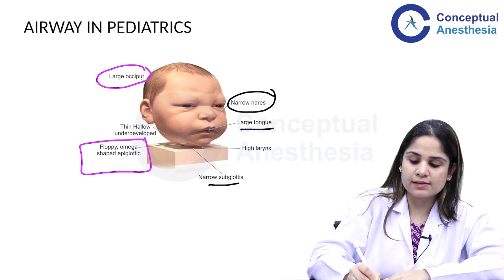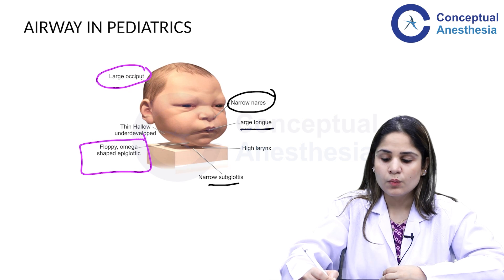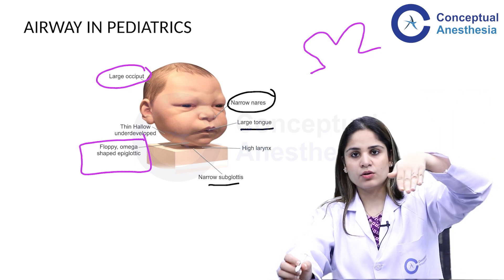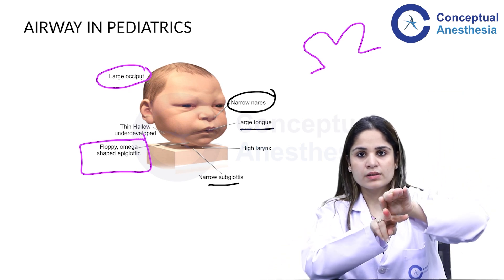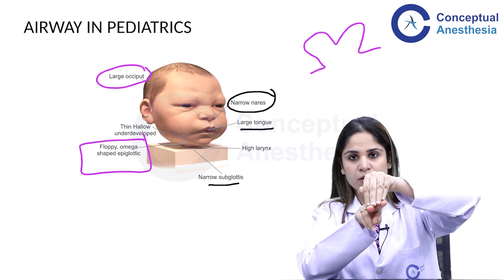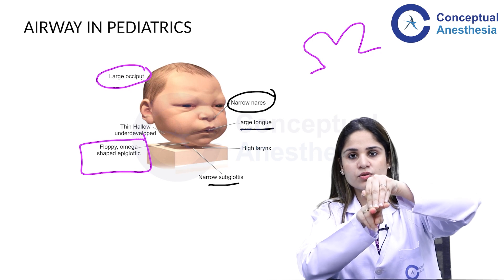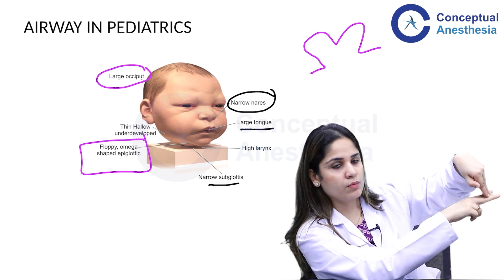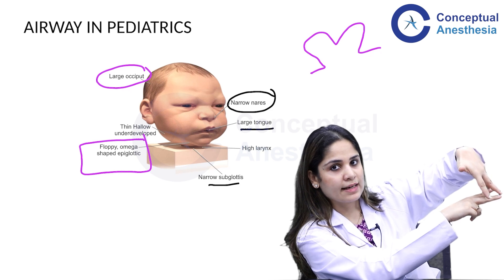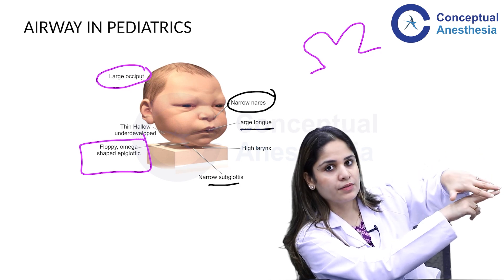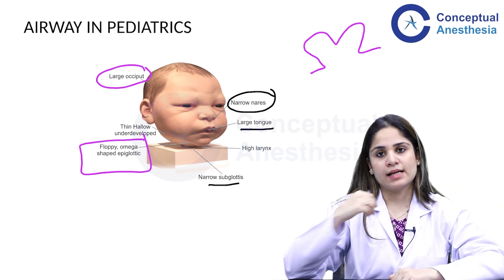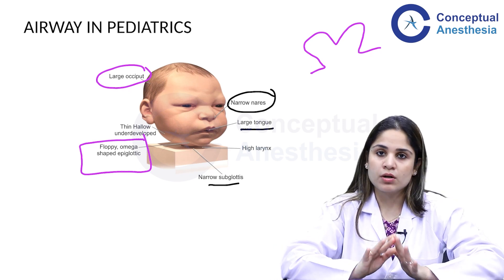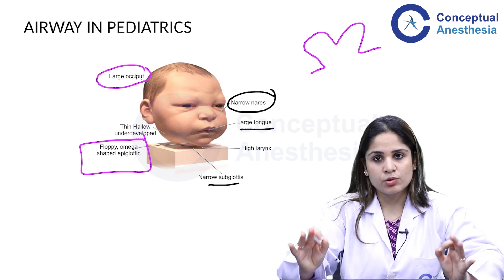The most important airway difference is that the epiglottis is omega-shaped in children, making it a floppy epiglottis. In a normal adult patient, when you place the laryngoscope in the vallecula and lift the epiglottis, it lifts easily to reveal the vocal cords. But in children, the epiglottis is both big and floppy — you try to lift it and it flops back down, preventing you from seeing the vocal cords and making intubation difficult. These are all changes in normal pediatric patients — no abnormalities — showing how very different they are from adults.